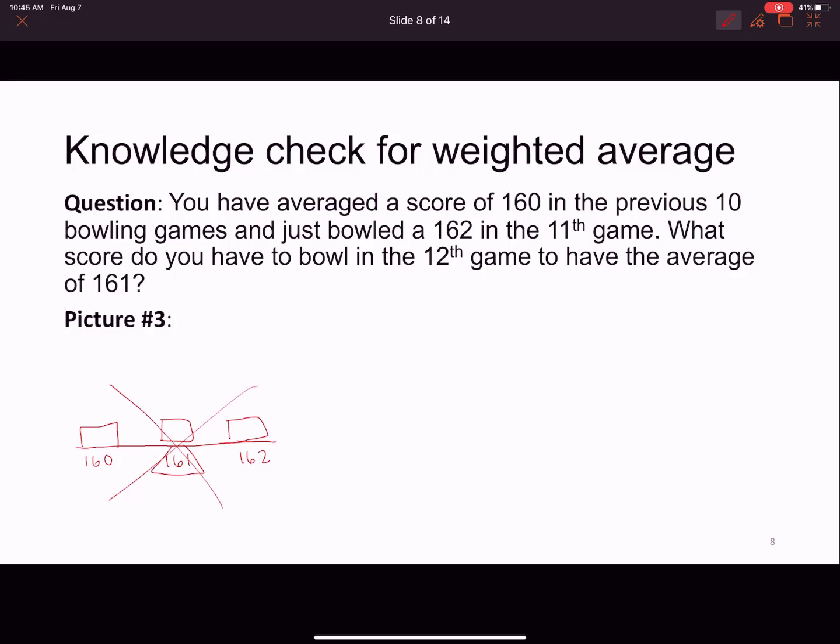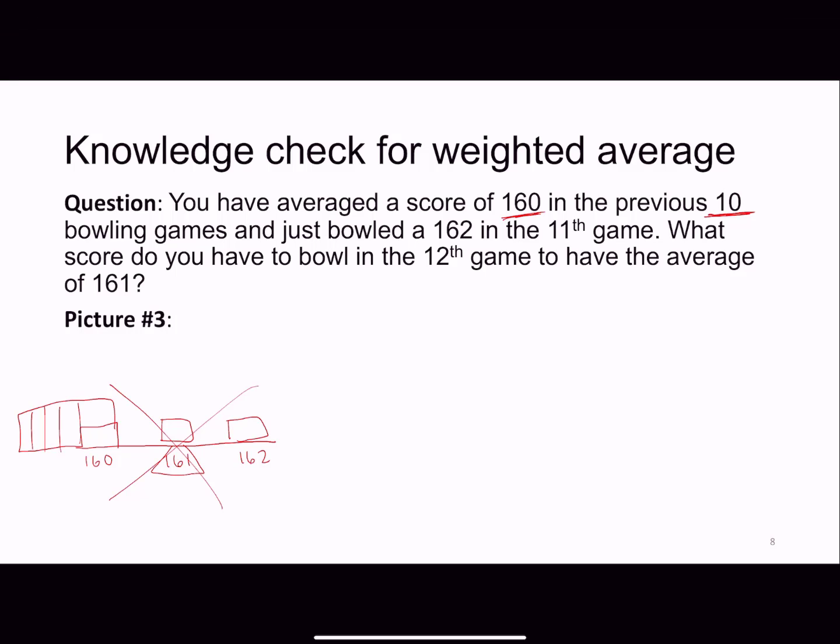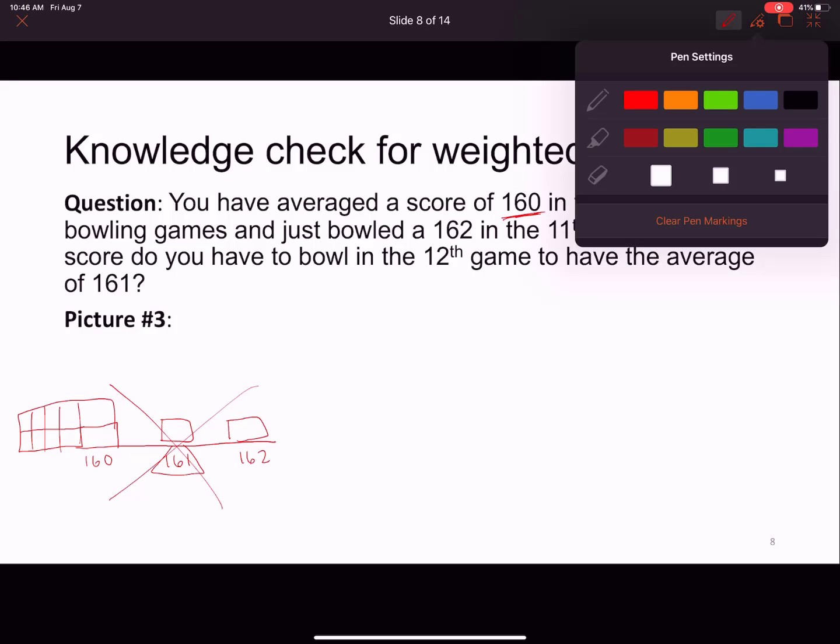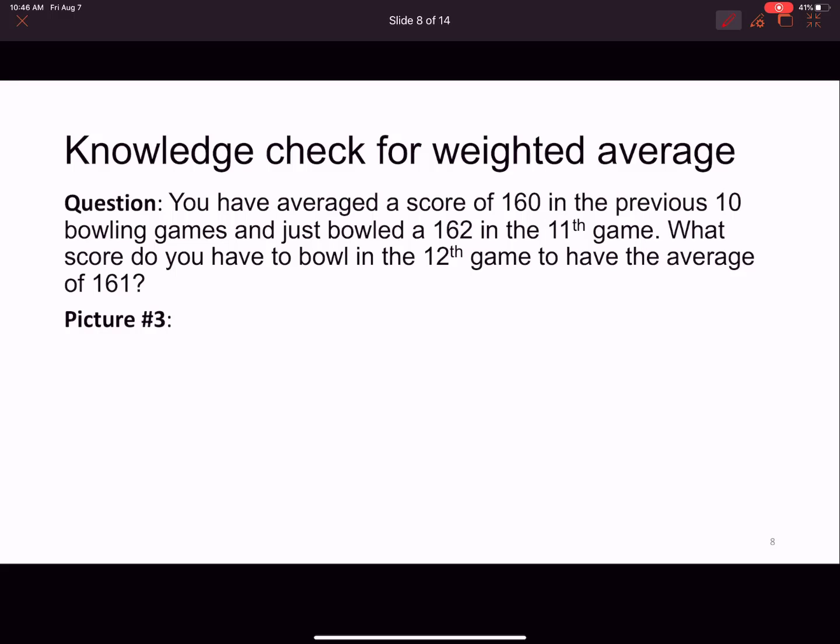Why? What is the problem? There should be 10 boxes in the 160 section. You bowled 10 games of 160. So really, it's like this: 1, 2, 3, 4, 5—like that, really you have 10 here. So you can definitely see that that's not balanced anymore. Right. So we're going to avoid doing that. That's not how you do that. So how do you do that?